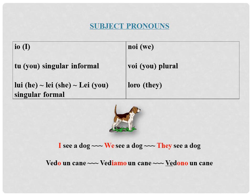Lei with the lower case L means she. Lei with the upper case L means you, singular, formal. Noi means we. Voi means you, plural. And loro means they.